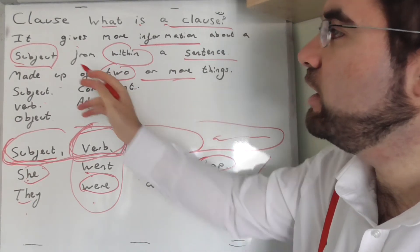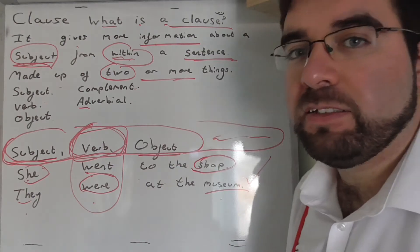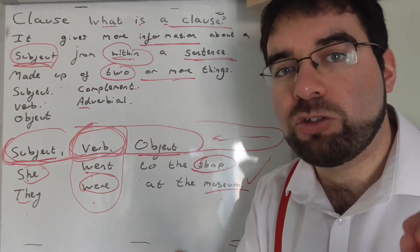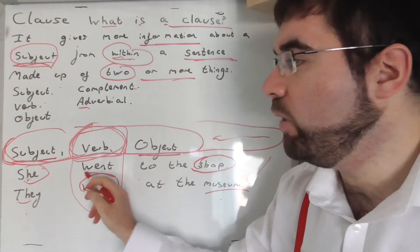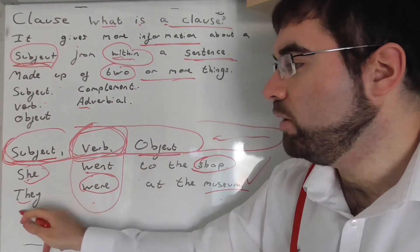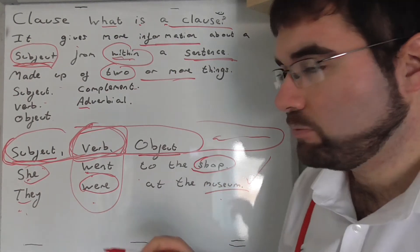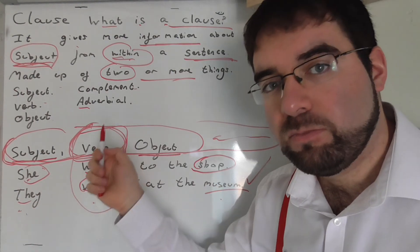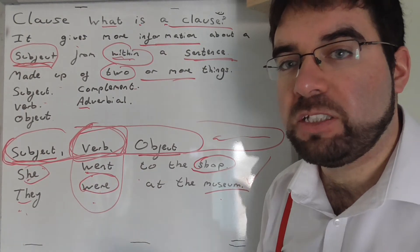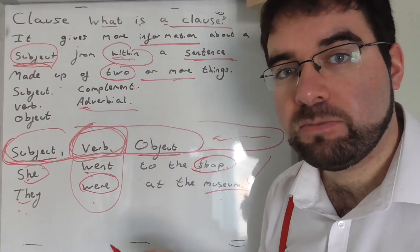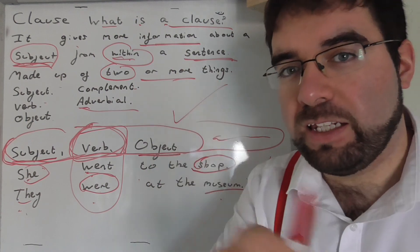So a clause reveals more about the subject from within a sentence. The sentence tells you something. She went to the museum, she went, go. They were, they weren't at the museum. He talked, talk. He listened, listen. They walked together. Walk, together - adverbial. Together. Very good. Let's keep going.